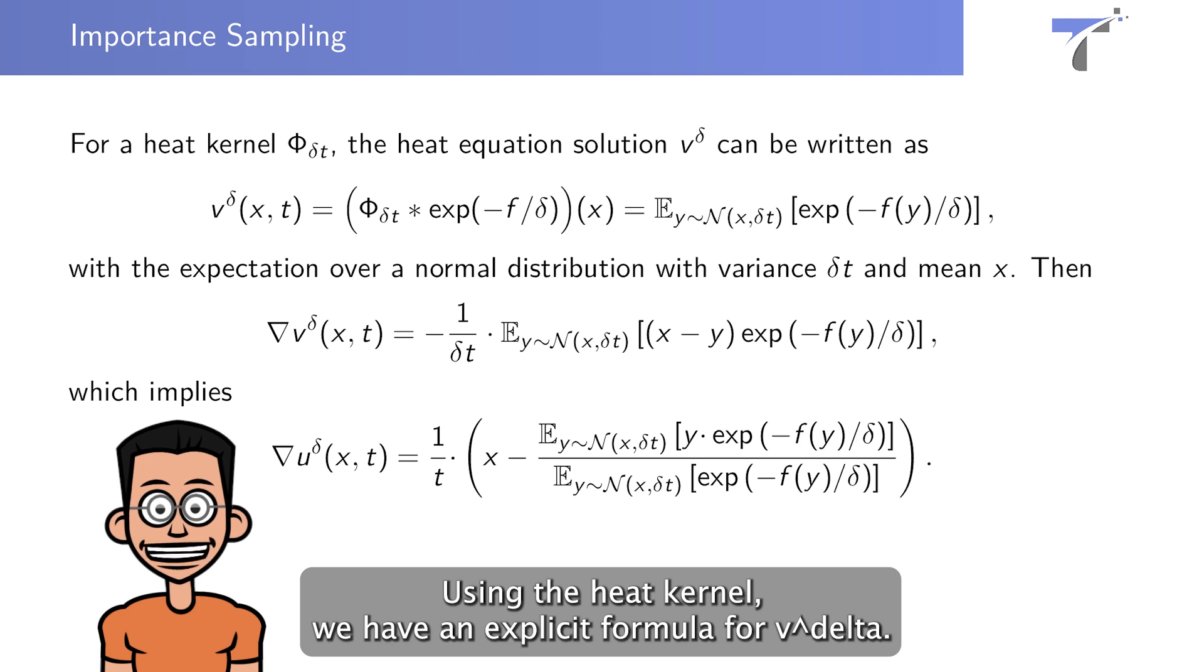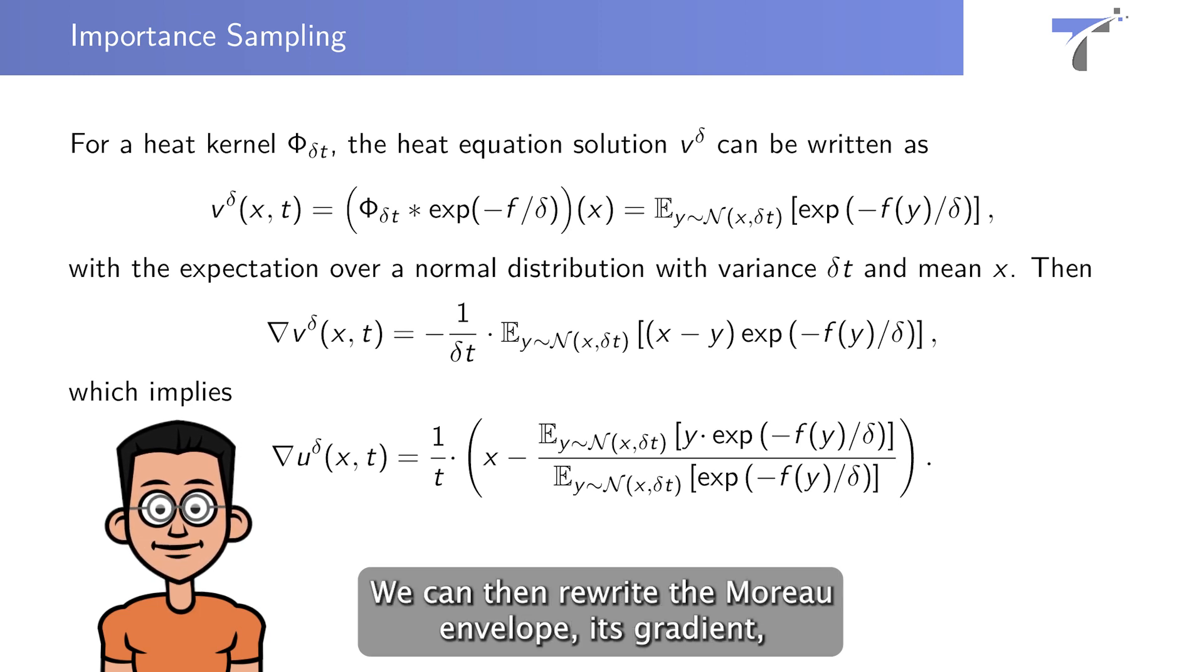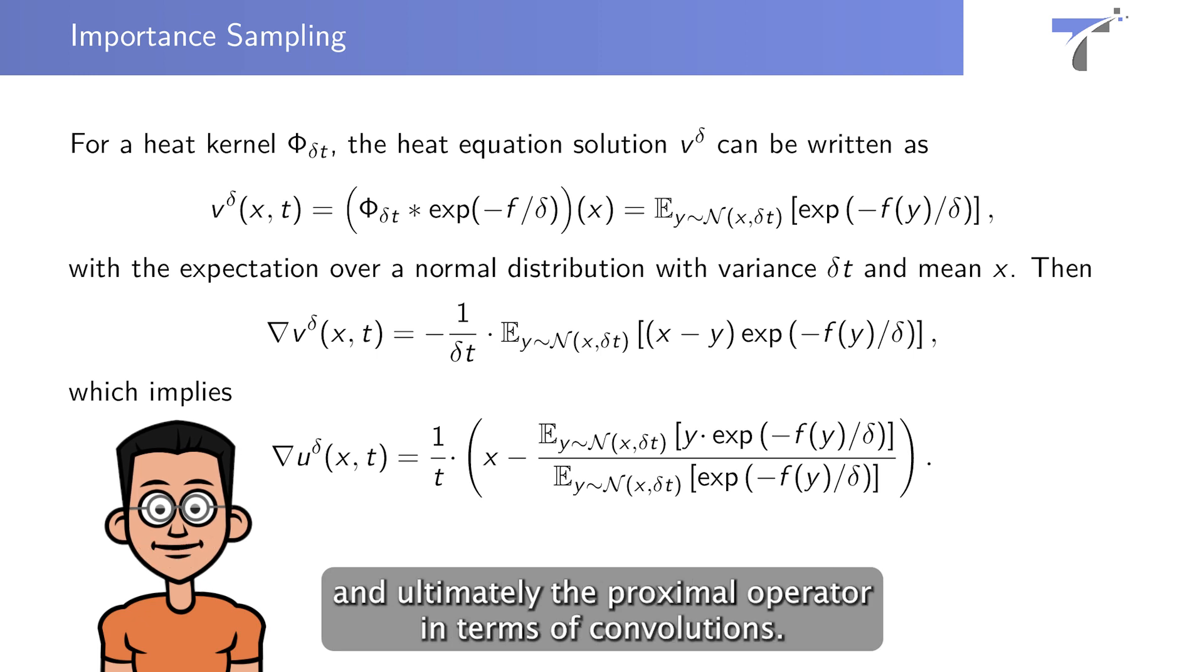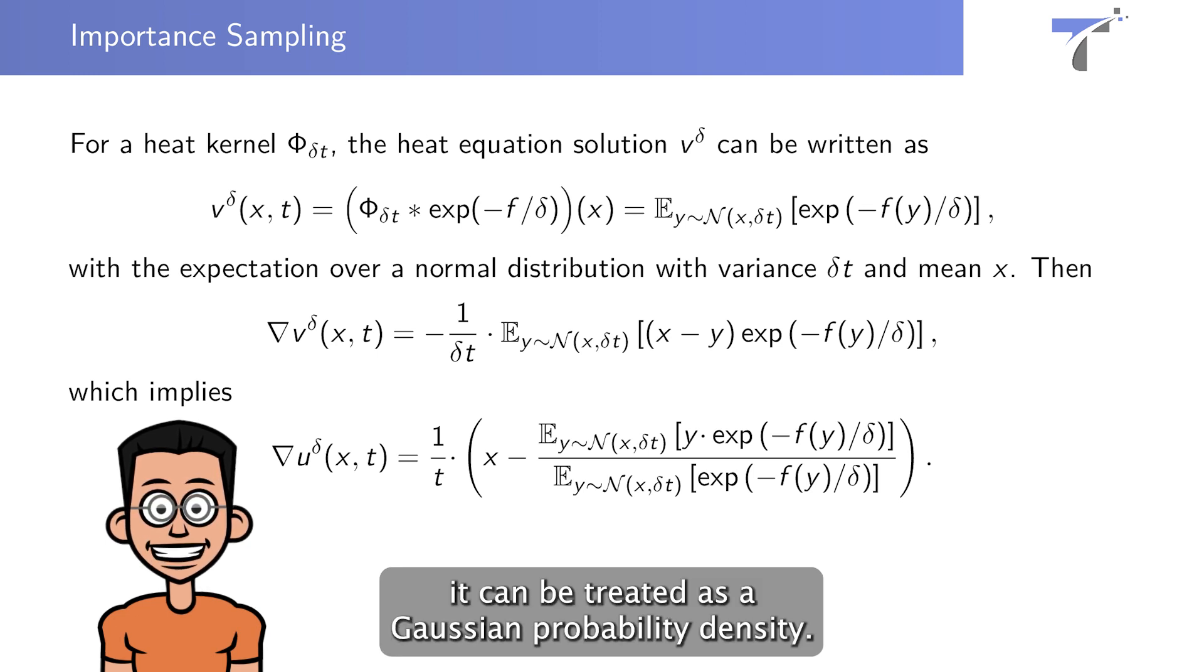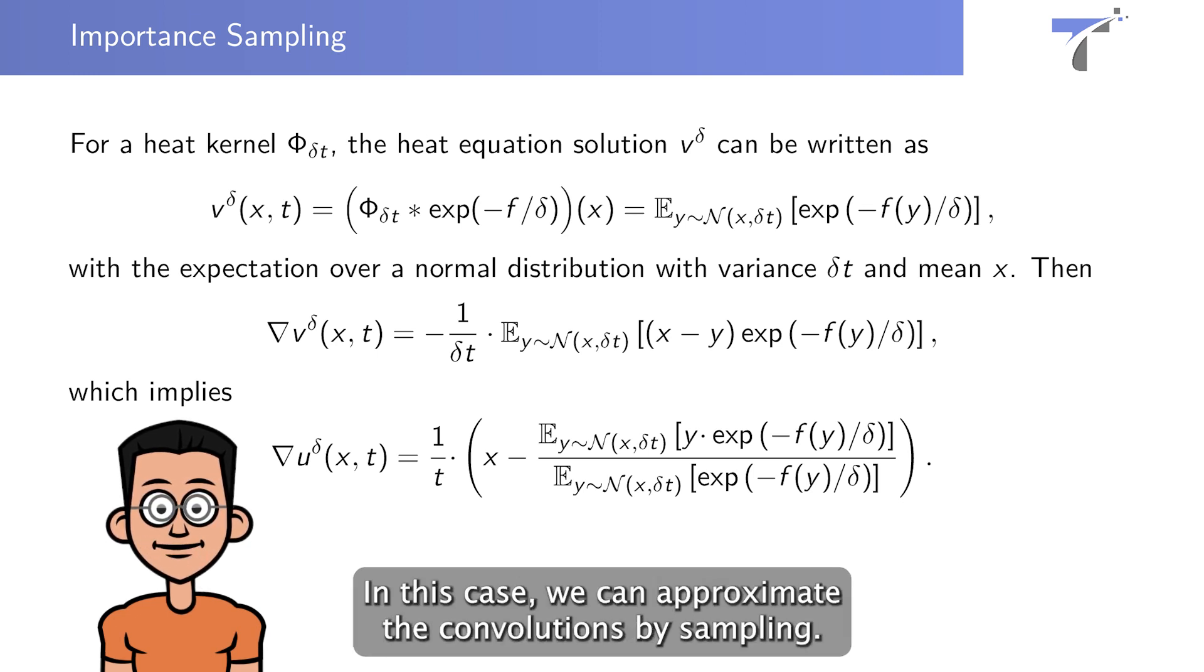Using the heat kernel, we have an explicit formula for v-delta. We can then rewrite the Moreau envelope, its gradient, and ultimately the proximal operator in terms of convolutions. Since the heat kernel has unit mass, it can be treated as a Gaussian probability density. In this case, we can approximate the convolutions by sampling.